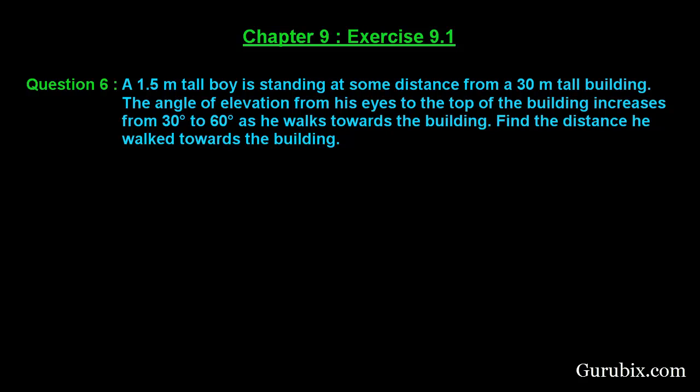Let us solve question number 6 of Exercise 9.1 of Chapter 9. The question says: a 1.5 meter tall boy is standing at some distance from a 30 meter tall building. The angle of elevation from his eyes to the top of the building increases from 30 degrees to 60 degrees as he walks towards the building. Find the distance walked towards the building.